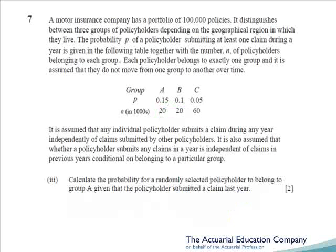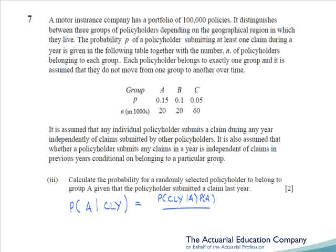On to part three. We're asked to calculate the probability that a randomly selected policyholder belongs to group A given that they submitted a claim last year — another conditional probability, but the other way around to what we've been working. We want the probability of group A given that they submitted a claim last year (CLY for short). Since this conditional probability is reversed, we'll make use of Bayes' theorem: the probability of claiming last year given group A times the probability of group A, all divided by the probability that they claimed last year — which is our answer to part one.